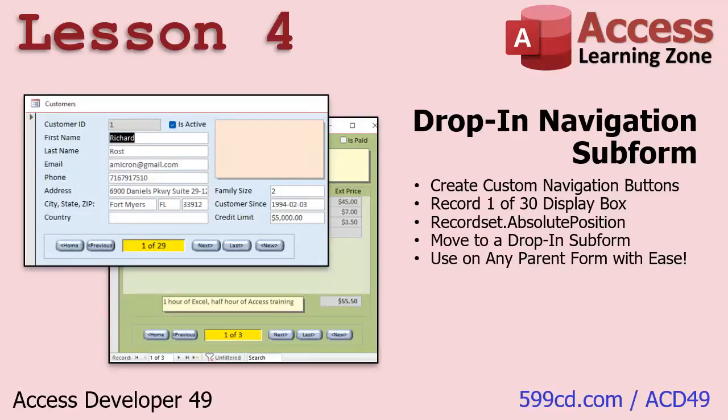And in lesson four, we're gonna make a drop-in navigation subform — this little guy right here. You know how to make buttons to go to the first record, next record, last record — that's beginner stuff. But in this video, I'm gonna show you how to manipulate the record set of the main form, display what record you're on, the total number of records using the record set properties and the absolute position property, which we really haven't covered yet. Then we're gonna take that and make it a navigation bar subform, so in the future, if you want to use it on a different form, you just drop that subform in, make a change to the properties and you're done. No VBA has to go in the parent form at all — the subform does all the heavy lifting. This is a great solution, and you'll see how it works in lesson four.